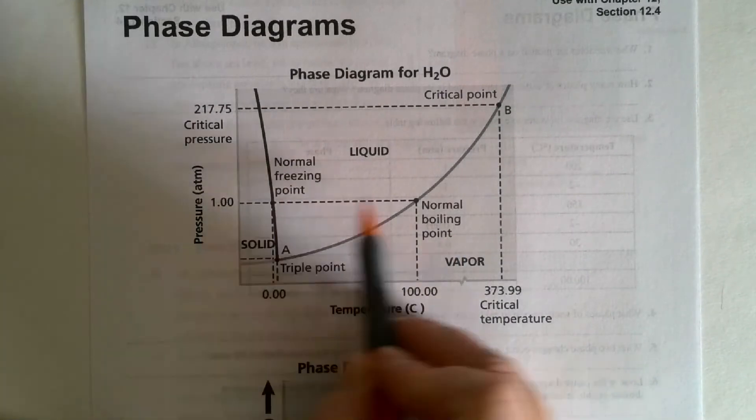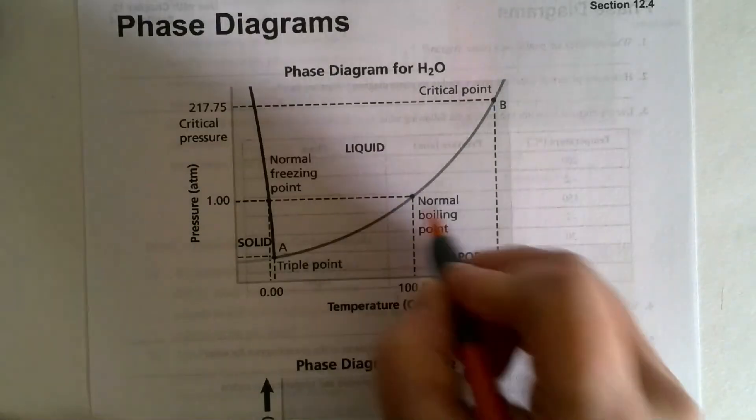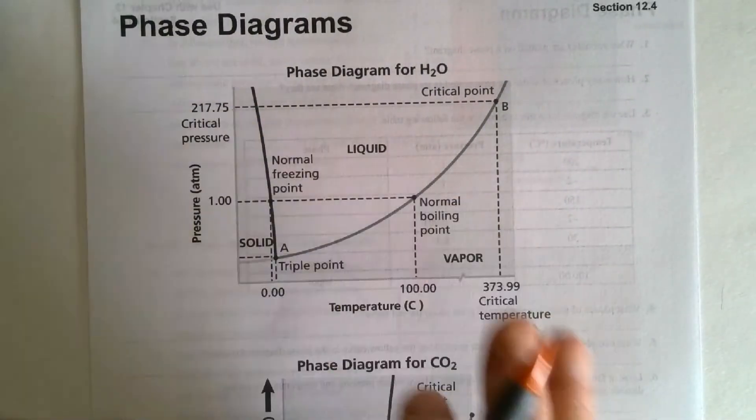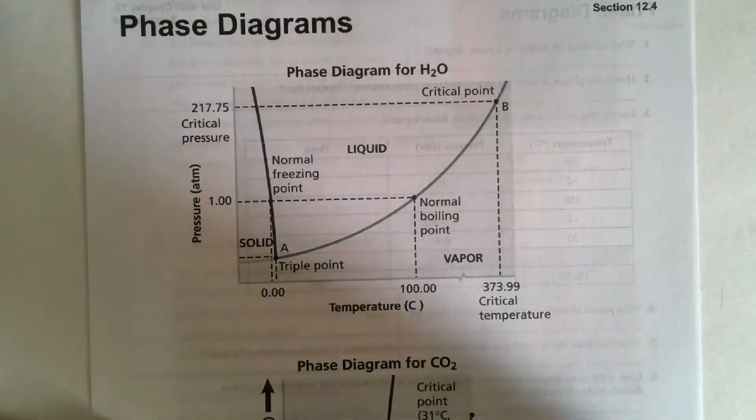Normal freezing point, normal boiling point, where it crosses over. This line indicates that cross from one phase to another as the temperature increases. Also, we can look at it as the pressure increases or decreases too.